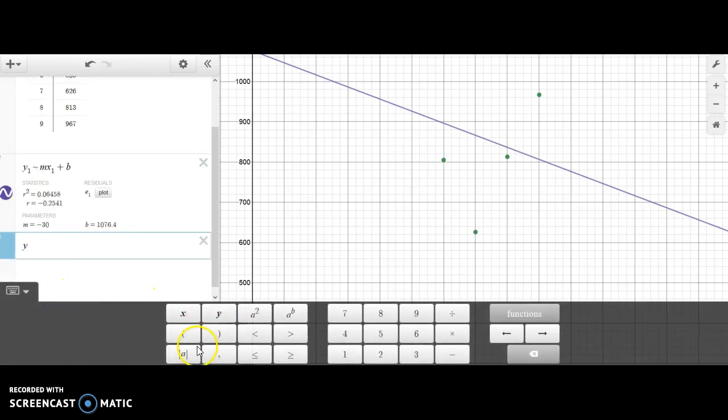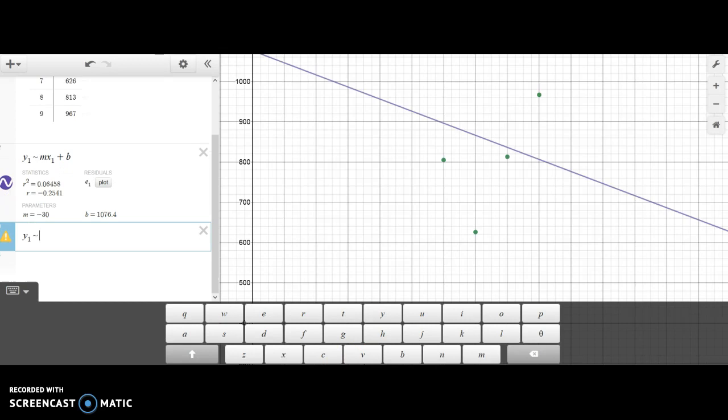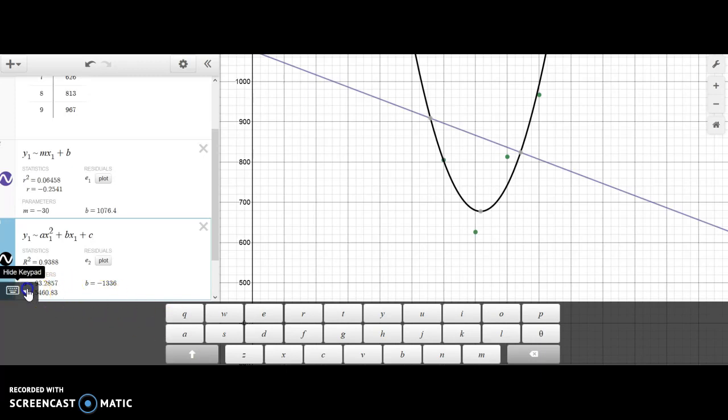So we're going to use the same y sub 1. We're just going to open a new line here. y sub 1 is approximately, now we're going to put in a x sub 1 squared plus bx sub 1 plus c so that we can obtain our quadratic value. Now this looks like a much better fit as it's trying to get as close to the data points as possible.